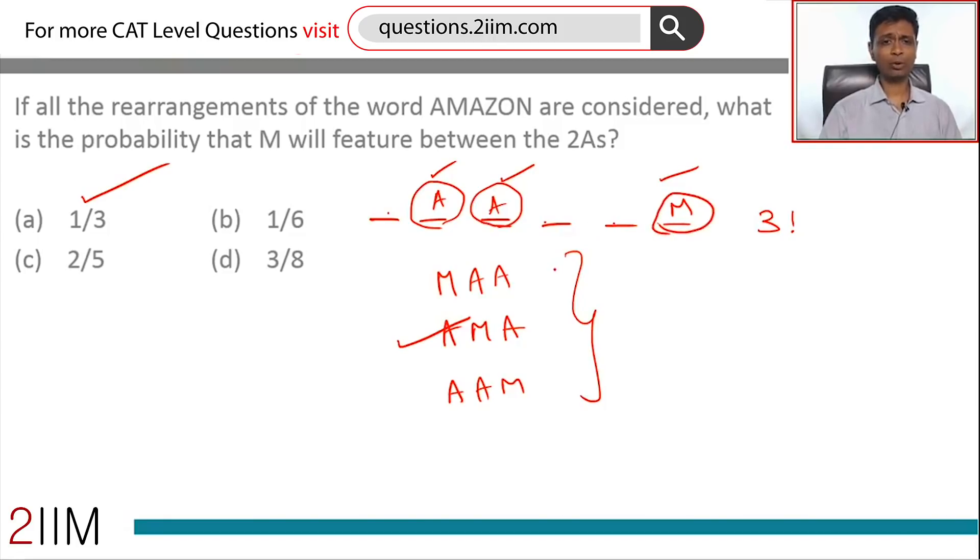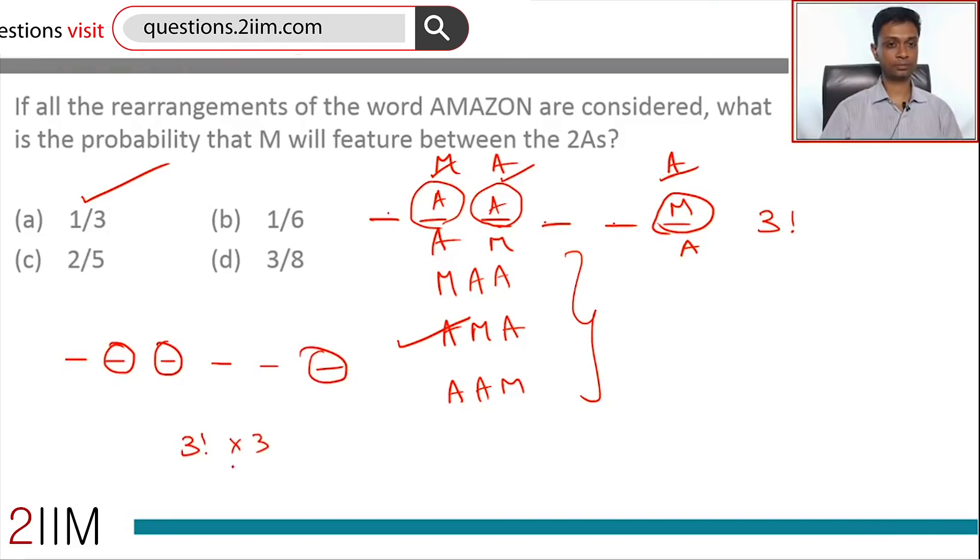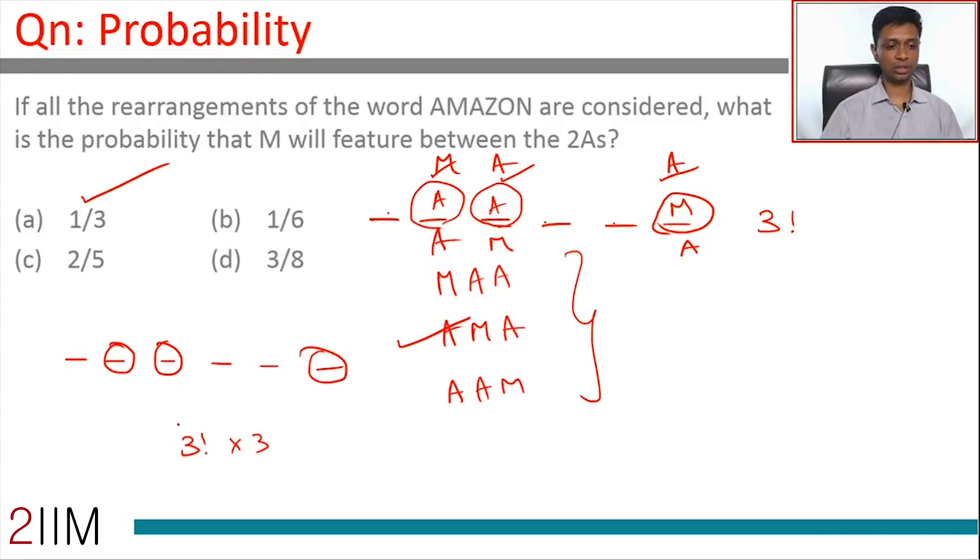Now let's expand this premise. The second, third, and sixth slots belong to A, A, and M, but they could be in any order. It could be AAM, it could be AMA, or it could be MAA. For each of these possibilities, there are three factorial words. Total number of words where the three letters we are looking at are in these three positions is three factorial times three. Within this, one three factorial satisfies the condition we are looking for—M in between two A's.